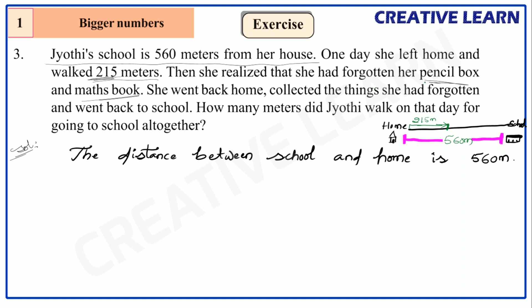Then she forgot her pencil box and math book, so she returned home to collect them — again she walked about 215 meters back. Firstly she walked to school 215 meters, then she returned home 215 meters to collect things. After collecting the things, she went to school. How much distance is that? 560 meters.